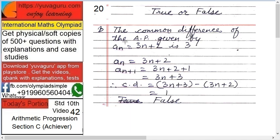The common difference of the AP given by AN equals 3N plus 2 is 3. AN means any term — any term is given by 3N plus 2. And the common difference is 3. This is what we have to prove.